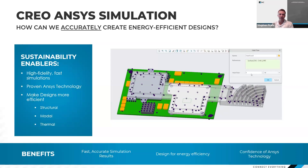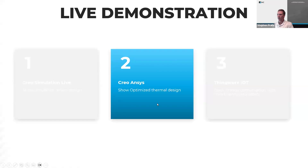Next is Creo Ansys simulation — another tool that can help with energy efficiency in products and product development. One of the drawbacks to CSL is accuracy. Although it gives us a really good idea of where our design is going, there are some limitations to constraints and mesh refinements. This is where Creo Ansys shines, powered by some of the best technology in industry today. Creo Ansys can bring us accurate simulation results that will lead to more energy efficient end-use applications. In this next demo, we're going to be doing a thermal analysis — a bit more directly related to energy efficiency.